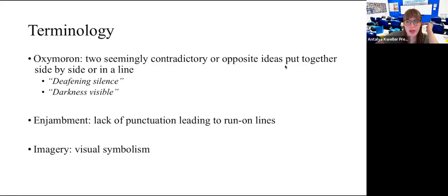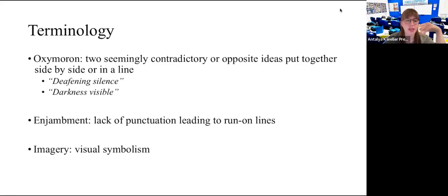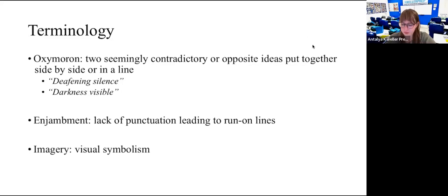We have another device called enjambment — when you have run-on lines because there's no punctuation. We'll go through some practice passages, so if I see one I'll point it out. And lastly, imagery — creating images for the reader to be able to picture. It is another version of visual symbolism.